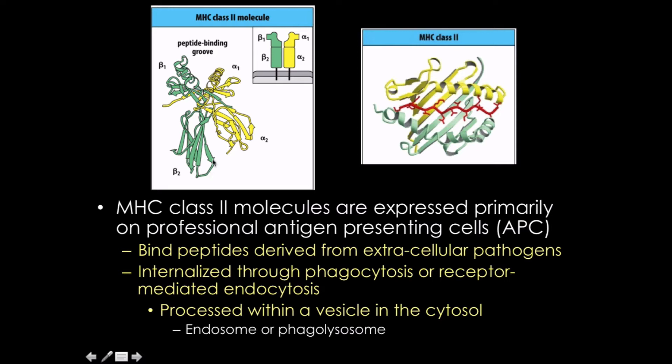So MHC class 2, as you may have noticed, don't have that beta 2 microglobulin. There's just a beta 1 and then an alpha 1 and then an alpha 2 and then a beta 2. If I were to guess, I'd say that they may have some homology between this and that of the T cell receptors. But notice how the binding groove we see here is a bit more wide. The picture kind of tries to demonstrate that. It's a little bit more wider. It can have larger peptides come in than that of MHC class 1.